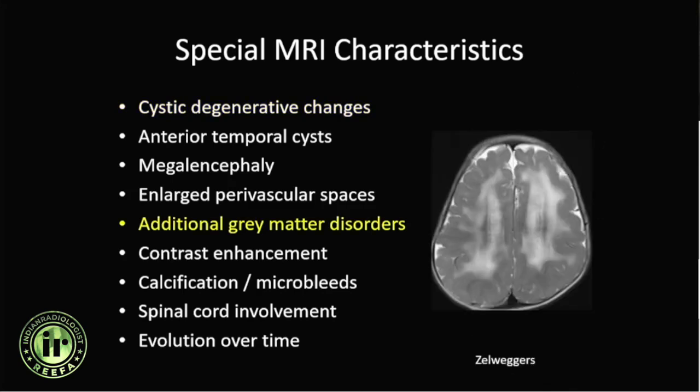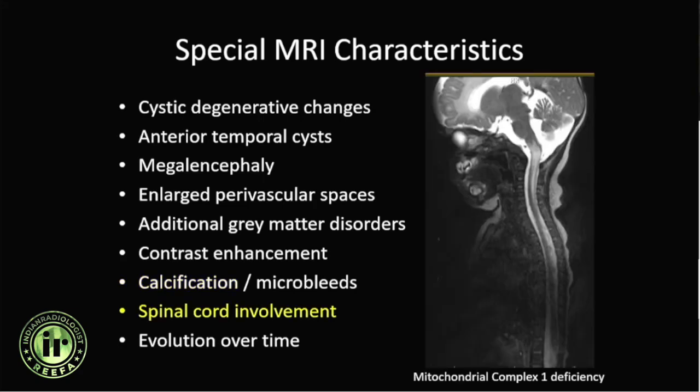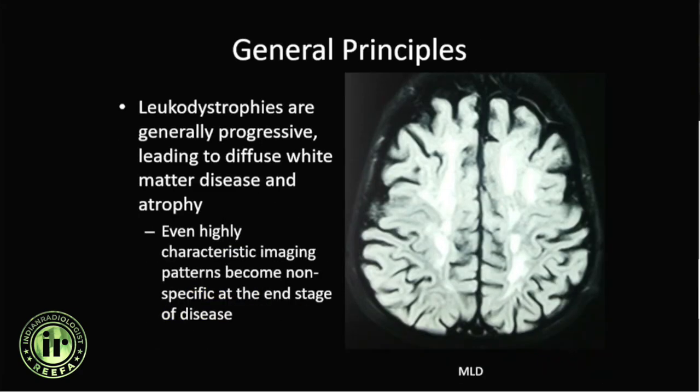Other special MRI characteristics to consider include whether there are cystic changes, abnormal malformations of cortical development, abnormal sulcation, associated calcification or bleed, or spinal cord involvement. We must also remember that leukodystrophies are progressive — they evolve over time — and in the end stages most will have diffuse atrophy and may be indistinguishable from one another.